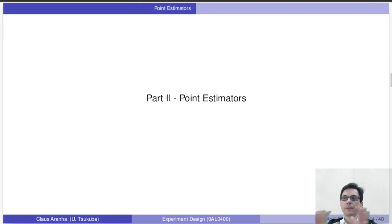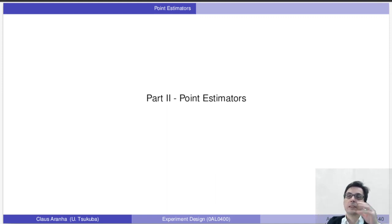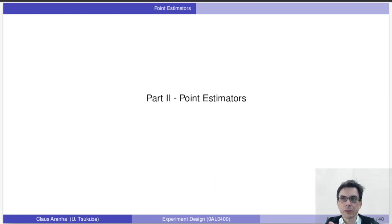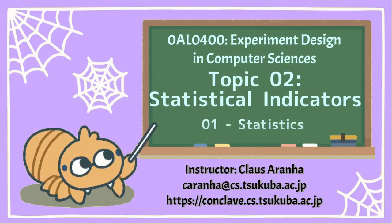And here is where we end the first video. To summarize, from the point of view of statistics, the goal of an experiment is to obtain data, and we use this data to calculate the parameters of the model that describes the thing we are trying to study. So if we want to know if the students of Tsukuba are tall, we can create a model that describes the height of the students as a normal distribution, and conduct an experiment to estimate the mean of this distribution. This mean would characterize the height of the students. In the next two videos, I will give you some details about point estimators and interval estimators. See you there.